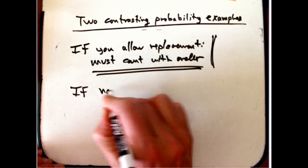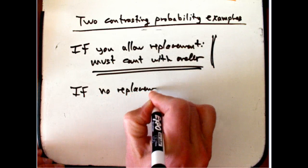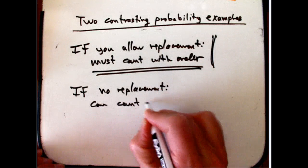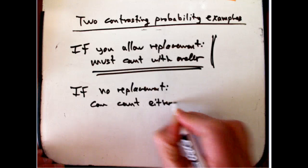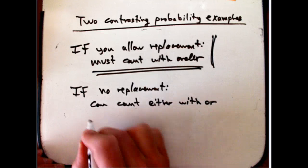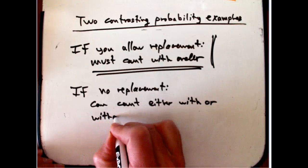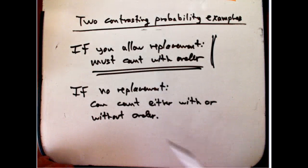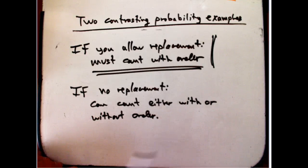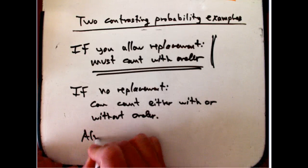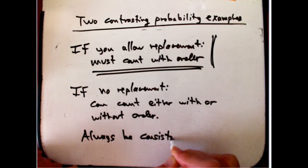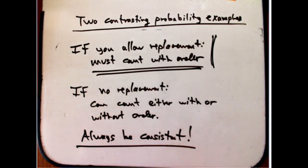If you don't allow replacement, then you can count either with or without order. But do it consistently, for God's sake. If you're going to count the sample space with order, count your event with order. If you're going to count the sample space without order, count your event without order. Don't ever do it inconsistently. So, always be consistent. That's where I want to stop.